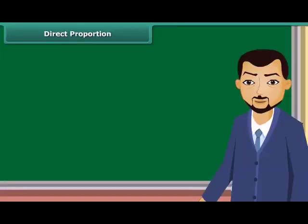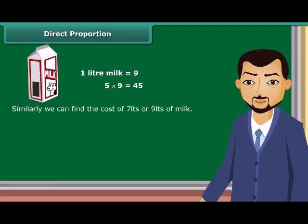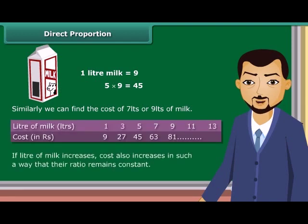Direct Proportion: If the cost of one liter of milk is rupees 9, then what would be the cost of five liters of milk? It is rupees 45. Similarly, we can find the cost of 7 liters or 9 liters of milk. As liters of milk increase, cost also increases in such a way that their ratio remains constant.